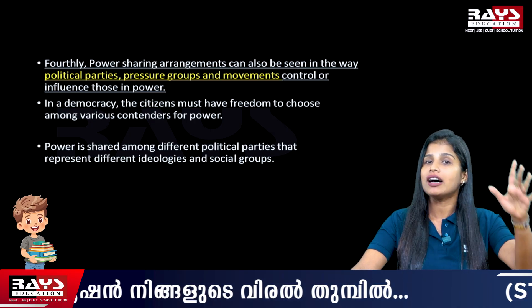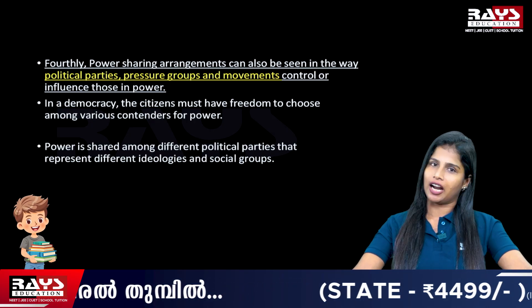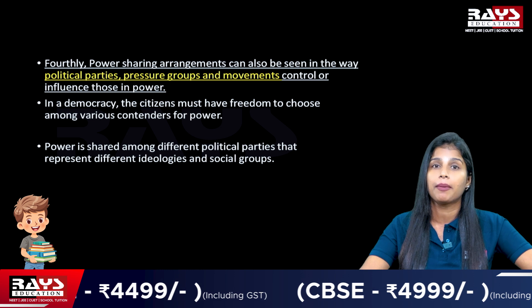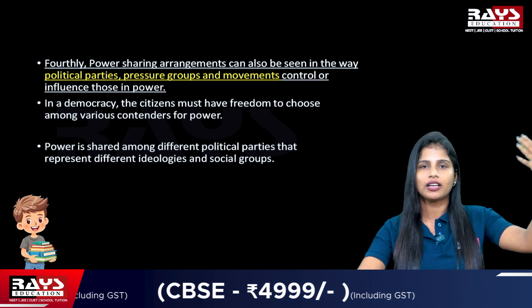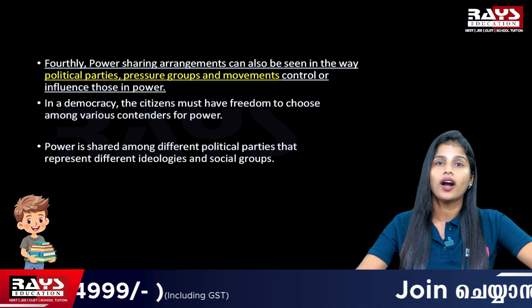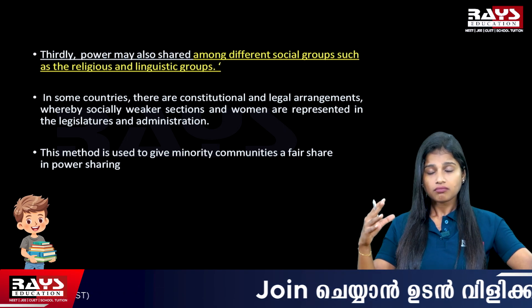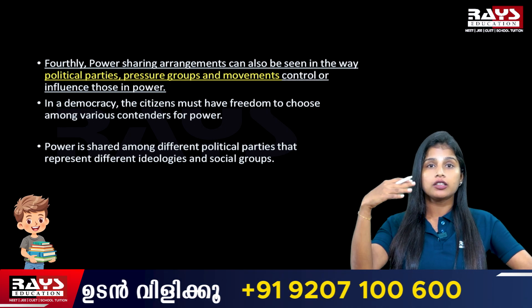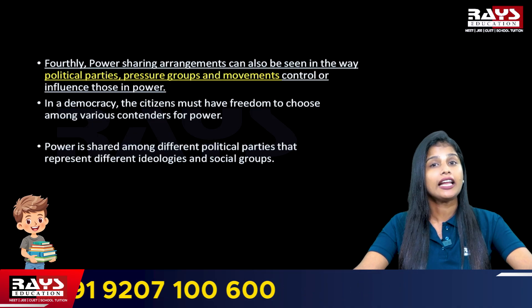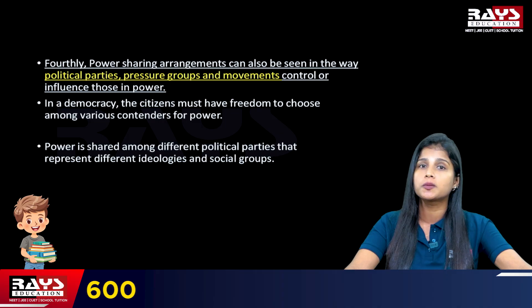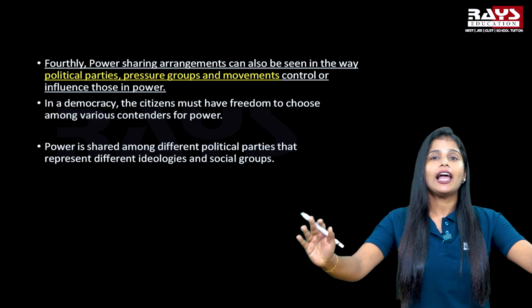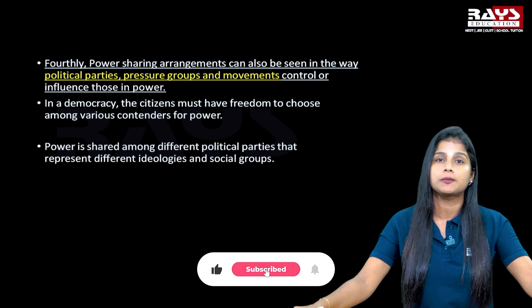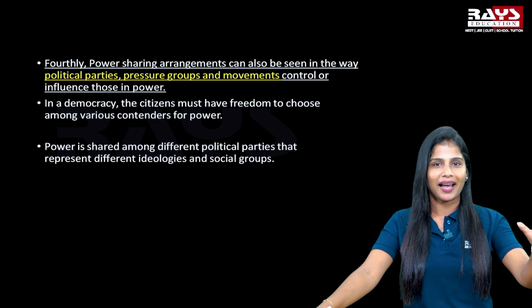So those are the four main forms of power sharing. First, power is shared among different organs of government — judiciary, executive, and legislature. Second, power is shared among different levels of government — central, state, and local self-government. Third, power is shared among different social, religious, and linguistic groups. Fourth, those in power can be influenced by pressure groups, interest groups, political parties, or movements. I hope you understood the content discussed in this video. Please subscribe to our YouTube channel. See you in the next video!